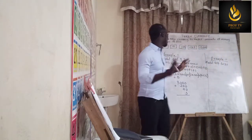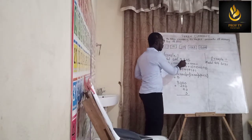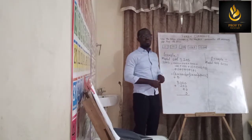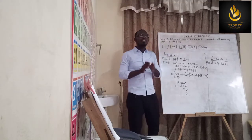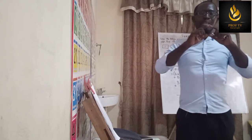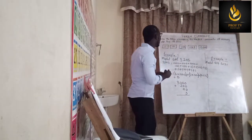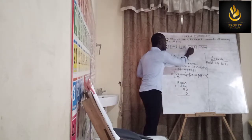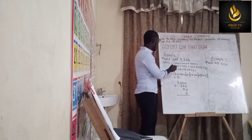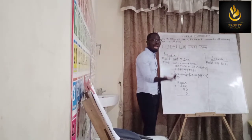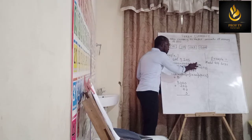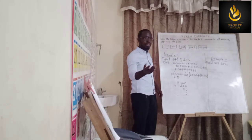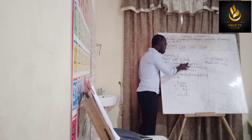The first example we want to look at is how to model 3,245 Ghana cedis. For the three thousand, I will go for the token currency indicating one thousand. So I take one thousand, then add another one thousand, then another one thousand, making three thousand.